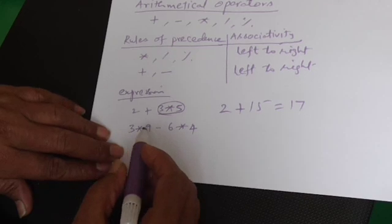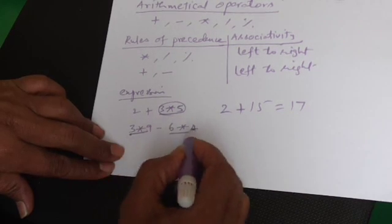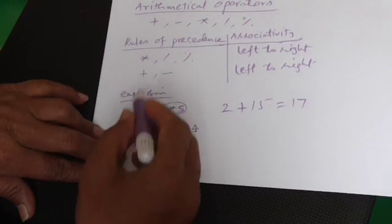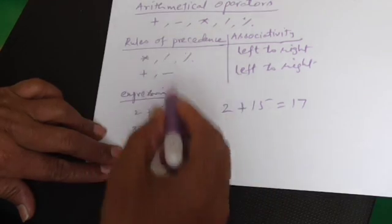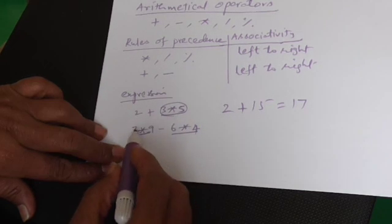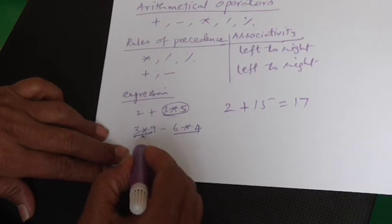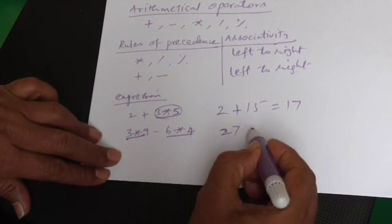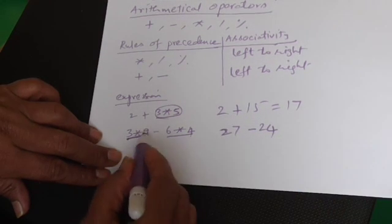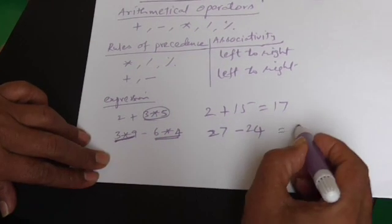Coming to this, for the mathematics, as per this rule, first this should be evaluated. Multiplication should be evaluated, and always the evaluation goes from left to right, following the Rules of Precedence and Associativity. But right now, only the Rules of Precedence come into the picture, because there is a multiplication symbol and also the subtraction symbol. So three nines are 27, then minus six fours are 24. First this is evaluated, this is evaluated, and finally the values are substituted, and it is 3.